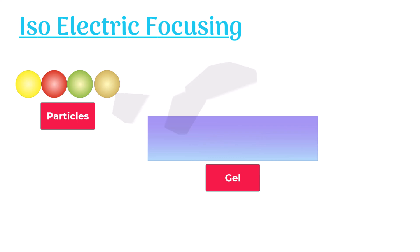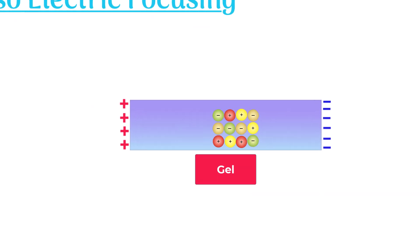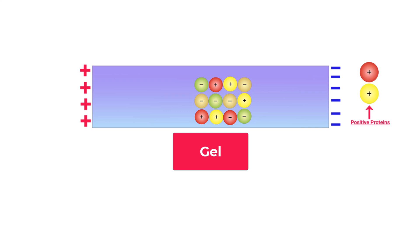One end of the gel becomes positive and the other one becomes negative. Now we place different proteins on the gel. Some proteins are positively charged and some are negatively charged.